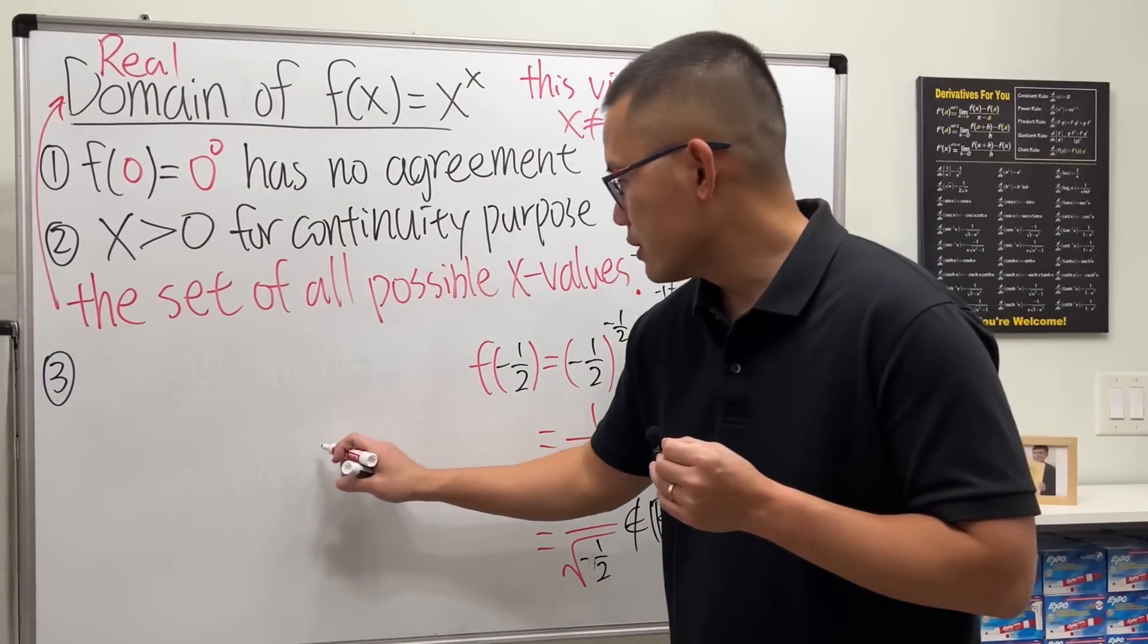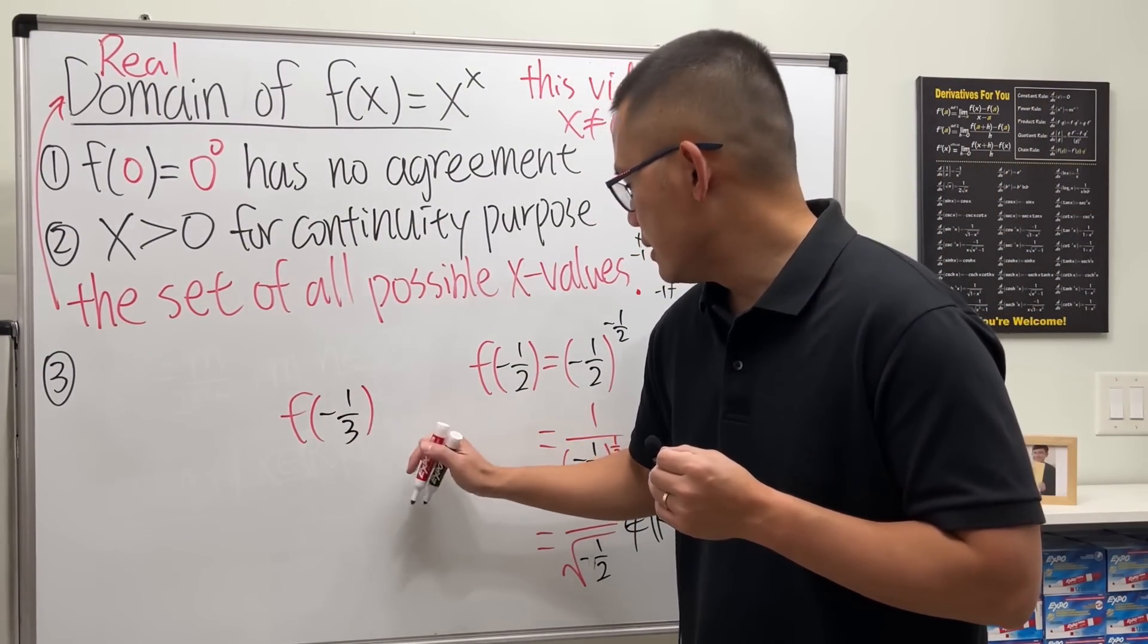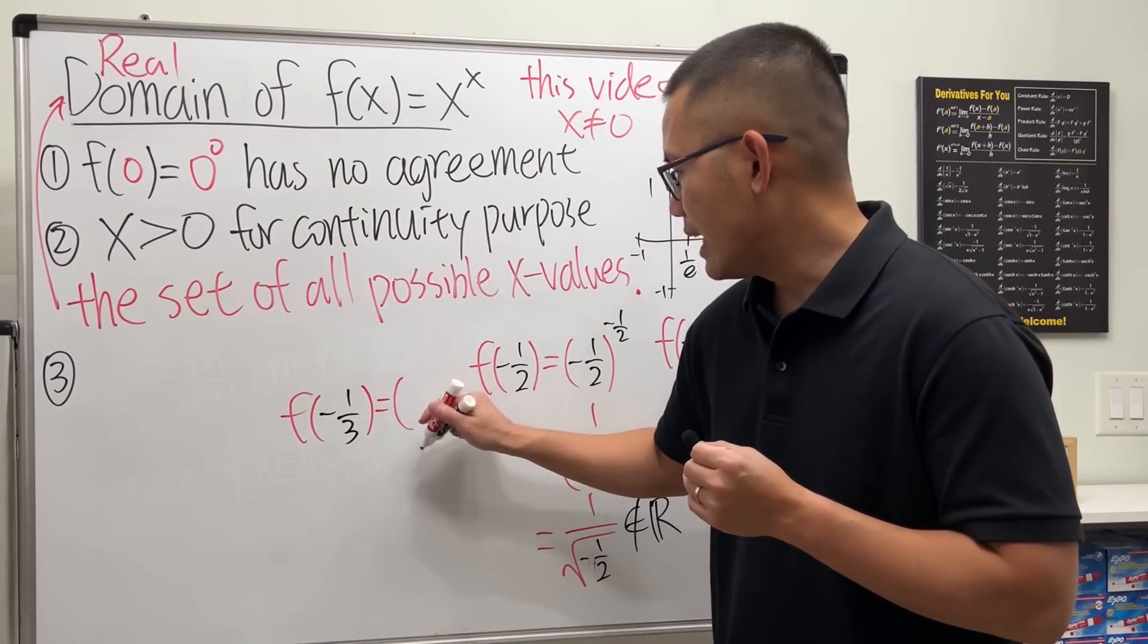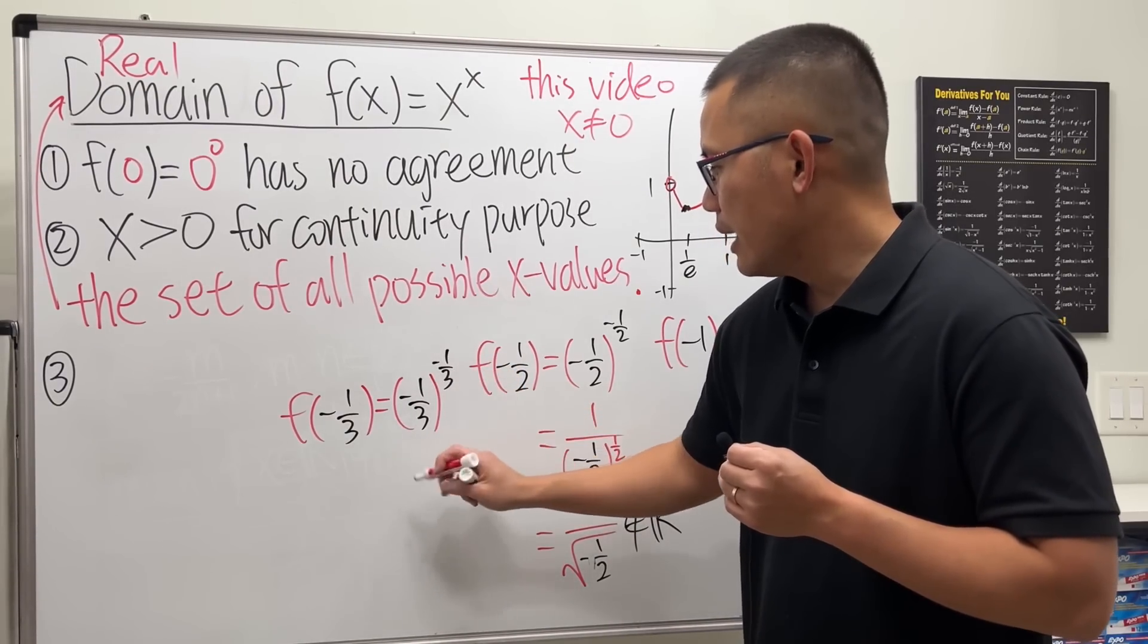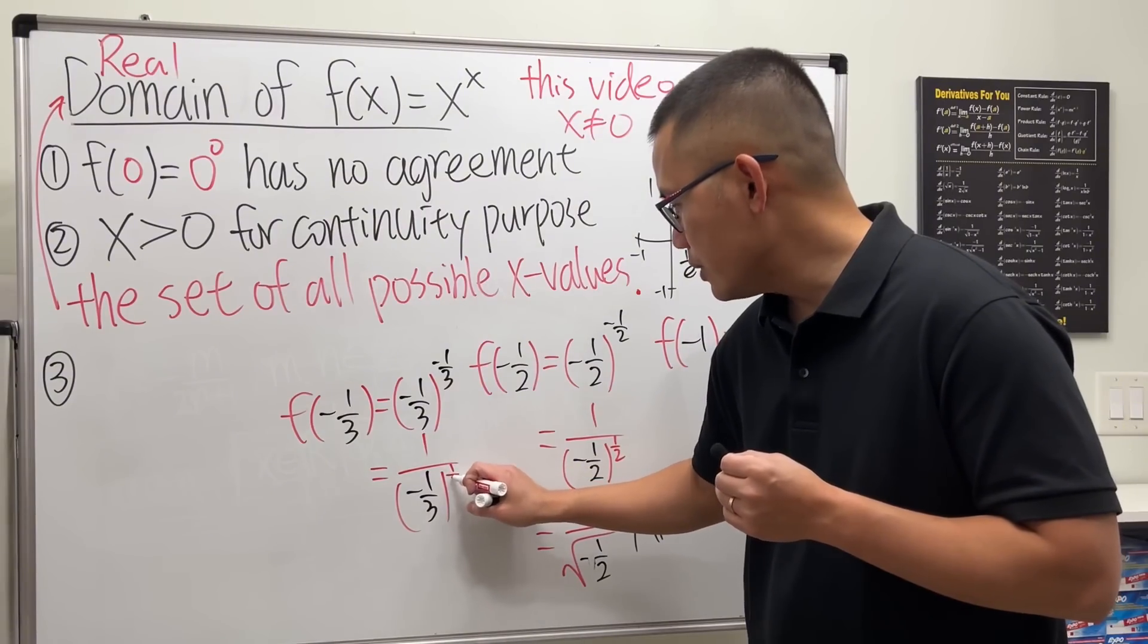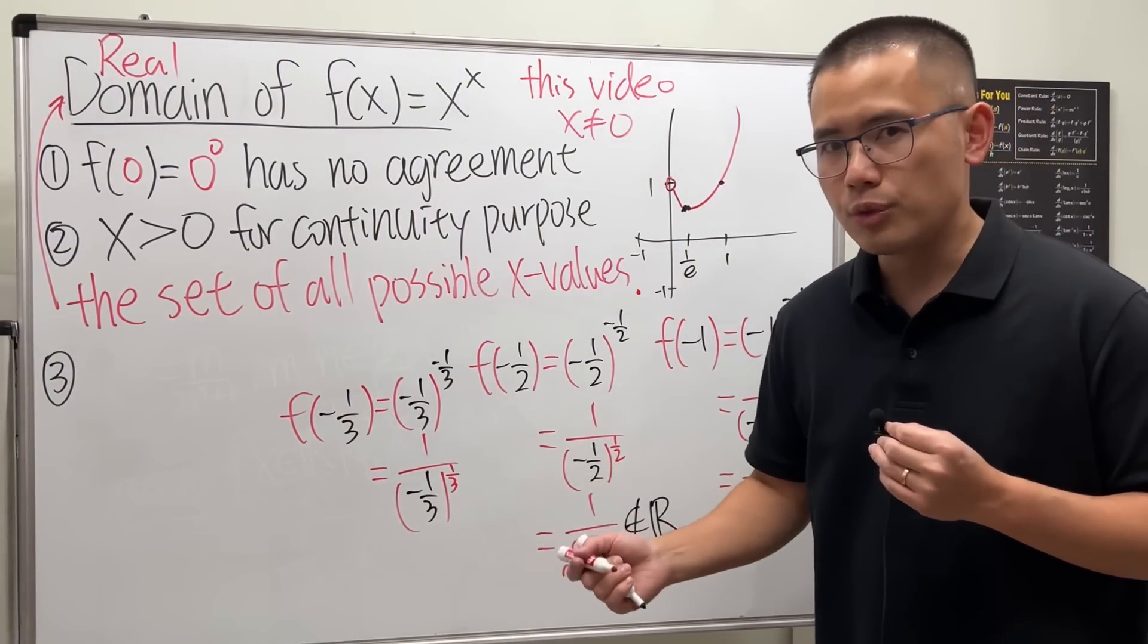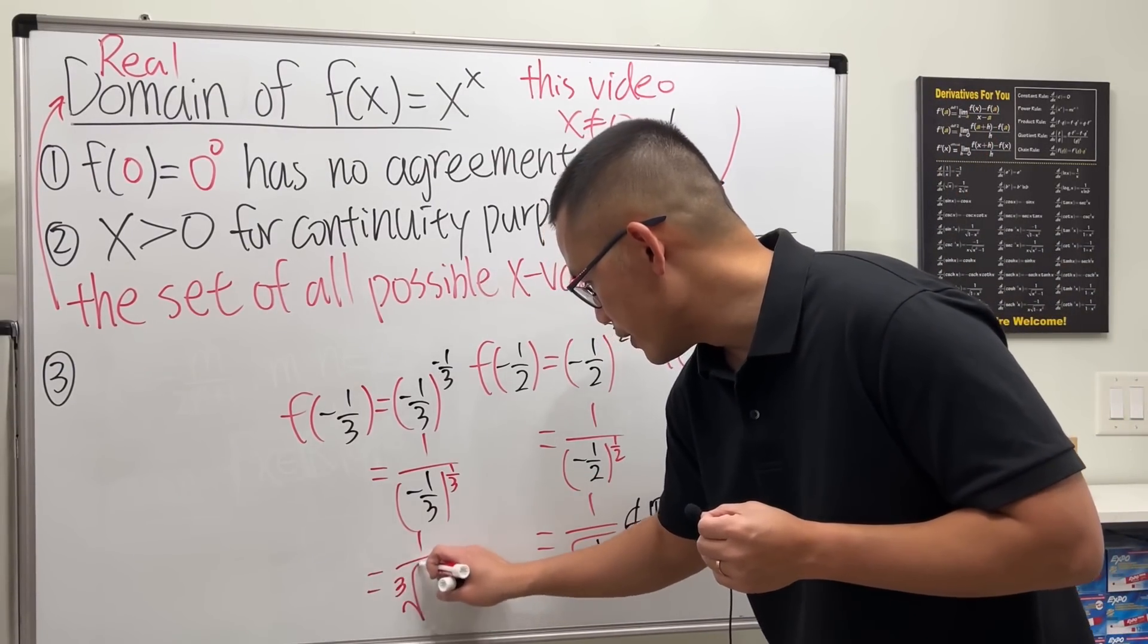For example, f(-1/3) gives us 1 over (-1/3) raised to the -1/3 power, which is 1 over (-1/3) raised to the positive 1/3 power. This turns out to be a cube root, so one over the cube root of a negative number.